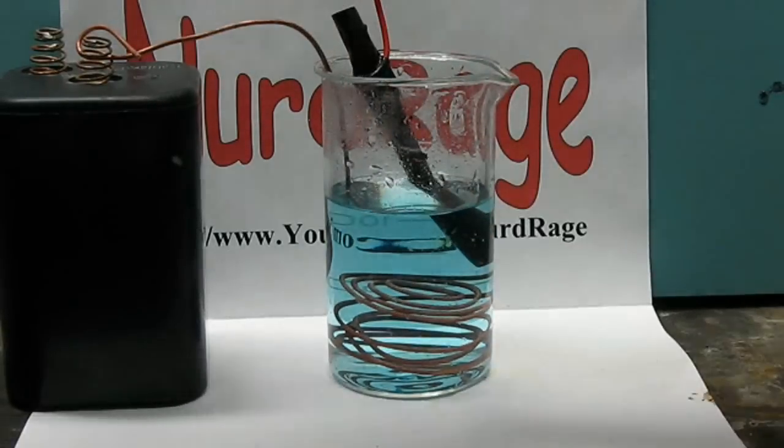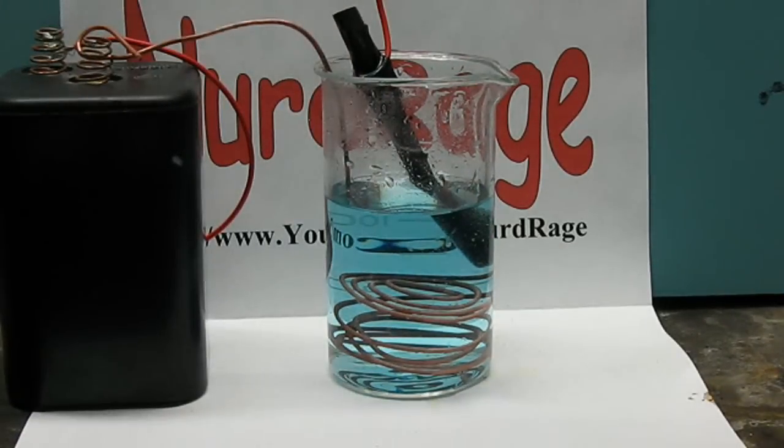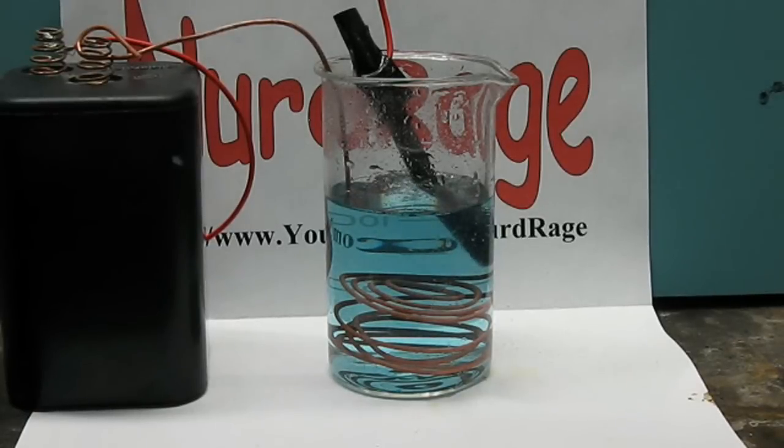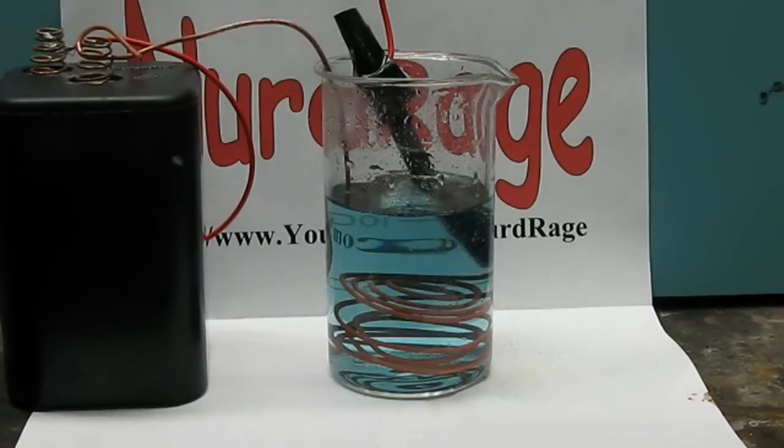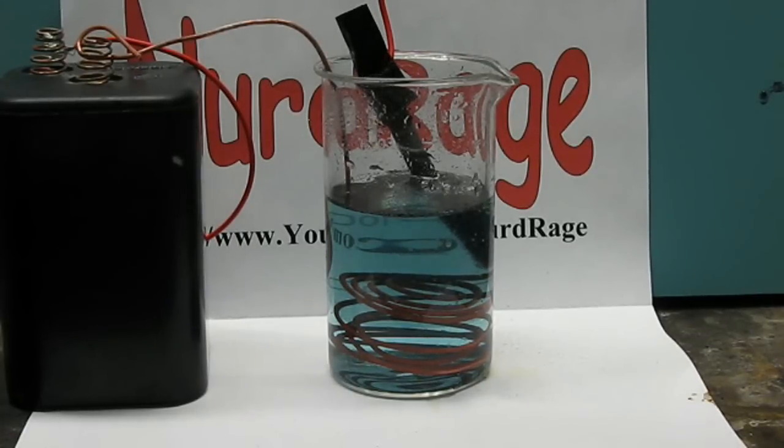Attach the carbon electrode to the positive terminal and suspend it above the copper electrode. The electric current causes the copper ions to deposit out as copper metal at the copper electrode. The water is split at the carbon electrode, liberating oxygen that bubbles out. The leftover hydrogen ions combine with the leftover sulfate to form sulfuric acid.